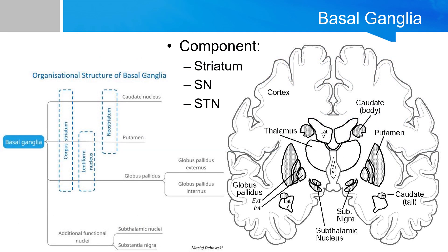The basal ganglia is a group of subcortical nuclei. The word basal is used because they're found near the base of the brain. The word ganglia, however, is a bit of a misnomer because the word ganglion is used to describe the peripheral nervous system. The word nucleus is more appropriate in this case. The grouping of these nuclei is related to their function instead of their anatomical location. The components of the basal ganglia are not part of a single anatomical unit but rather are spread deep within the brain.